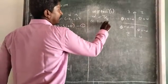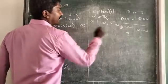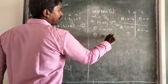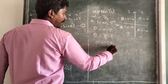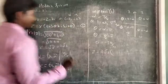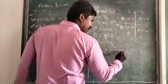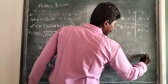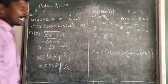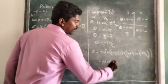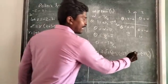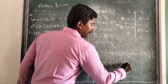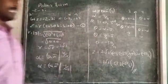Now using the third quadrant condition, θ = α − π = π/4 − π = −3π/4. Therefore z = 2√2 · (cos(−3π/4) + i sin(−3π/4)). Sometimes this is written using the shorthand 'cis', as z = 2√2 · cis(−3π/4). That is the polar form of the given complex number.